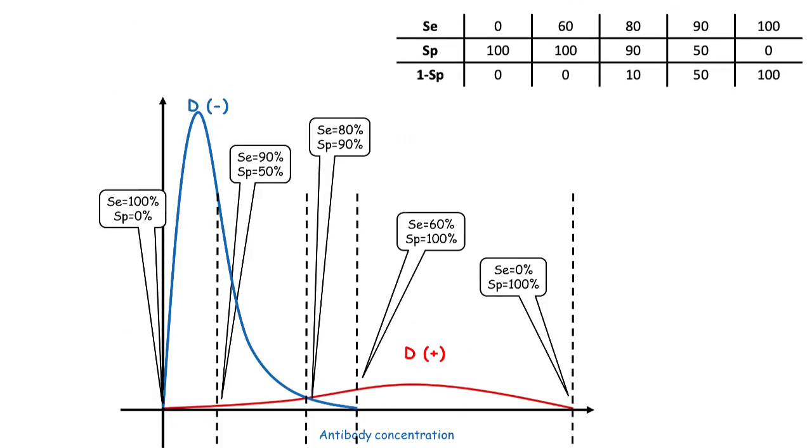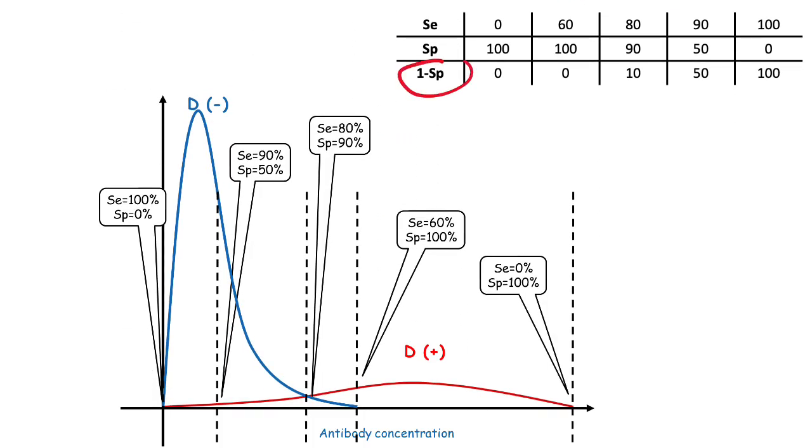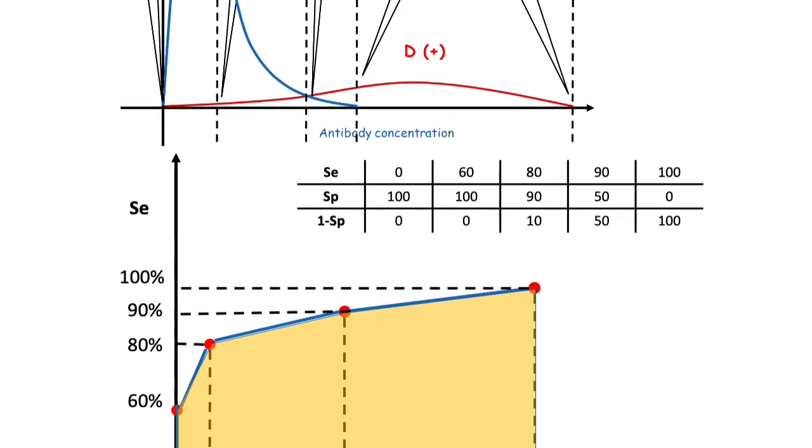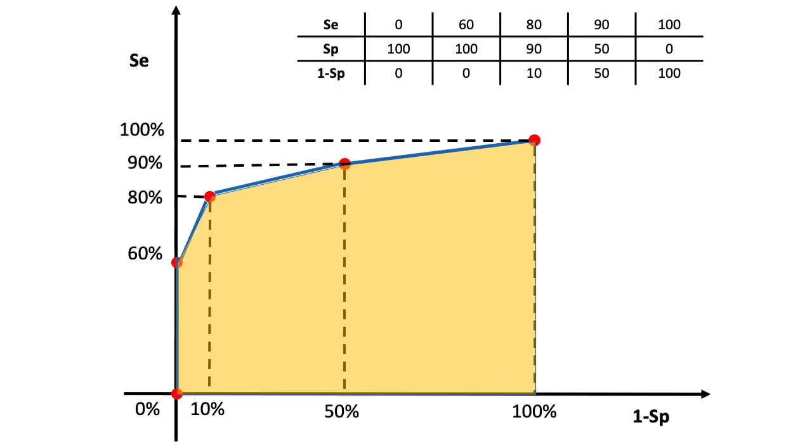Then, at each cut-off, you also calculate the false positive fraction. This is 1 minus the specificity of the test. A ROC curve is a plot of the pairs of all false positive and true positive results at each cut-off. There are several parameters we can calculate from the ROC curve, like the area under the curve, which is a measure of the overall discriminatory power of the test.